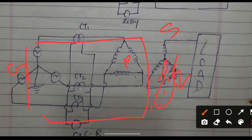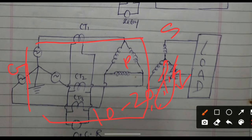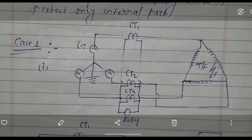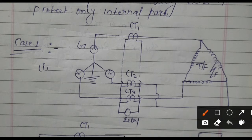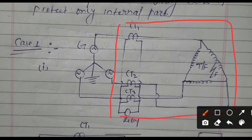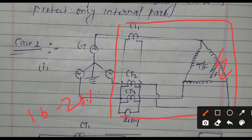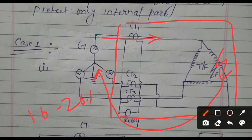If the fault is minor — only 10 to 20 percent — then it will not get effect on the delta side. The positive, negative, and zero sequence currents will not sense any current on the delta side, and the relay will not operate. But if the fault occurred in the internal zone of the transformer — this is our protection zone — the relay is set at 10 to 20 percent of rated current. Suppose the fault occurs here; this fault current flows through the generating side and through all the CTs.